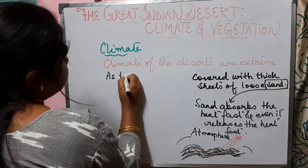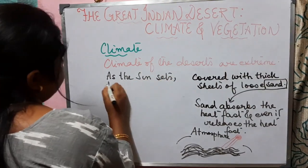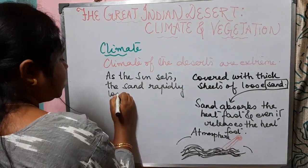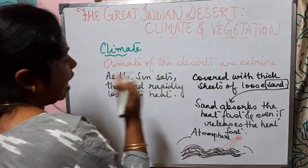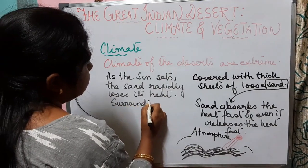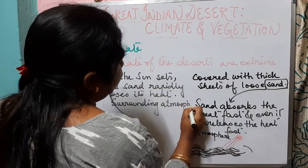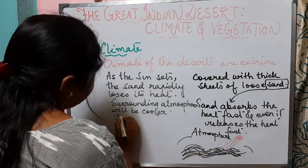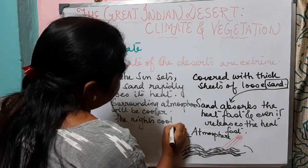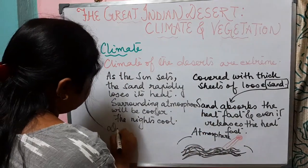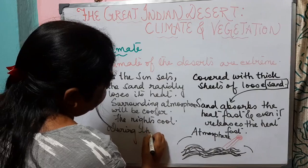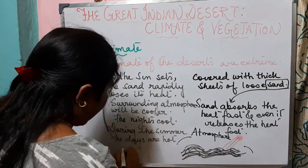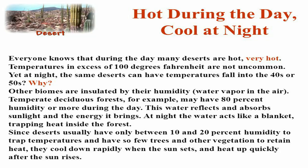At night, as the sun sets, the sand rapidly loses its heat, so the surrounding atmosphere will be cooler. As a result, the nights are cool. So during the summer, the days are hot and dry and the nights are cool.